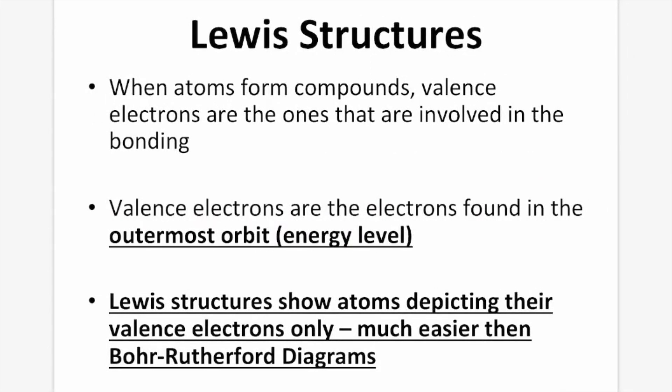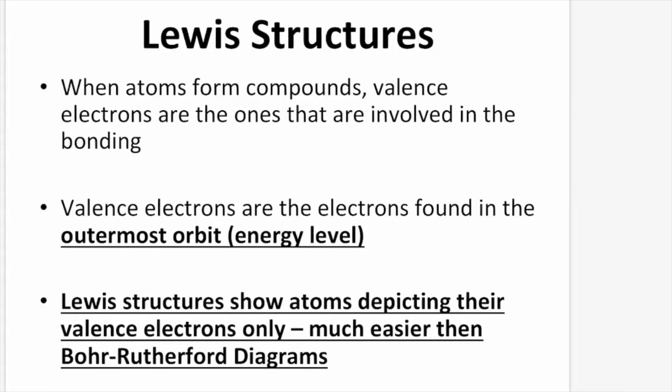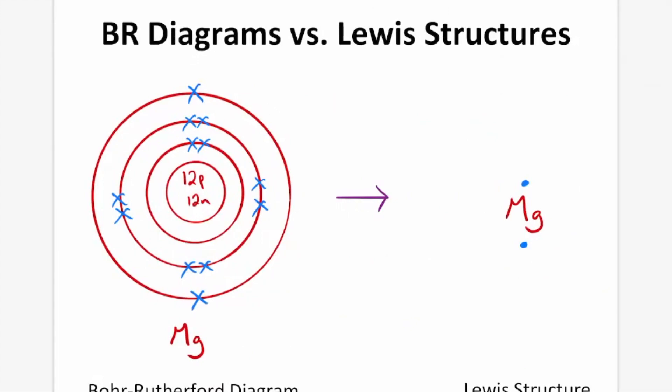Lewis structures. When atoms form compounds, valence electrons are the ones that are involved in the bonding. Valence electrons are the electrons found in the outermost orbit, also called the outermost energy level. Lewis structures show atoms depicting their valence electrons only. This makes them much easier and faster than Bohr-Rutherford diagrams. In these two diagrams, you can see the difference — on the left we have our Bohr-Rutherford diagram, and on the right we have our Lewis structure.